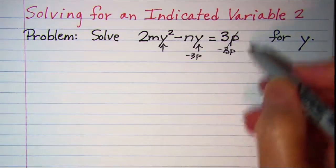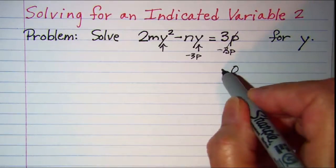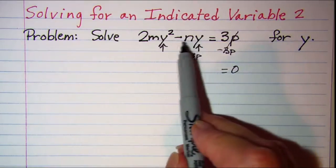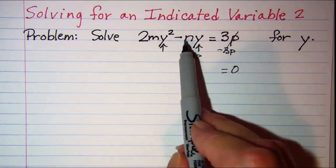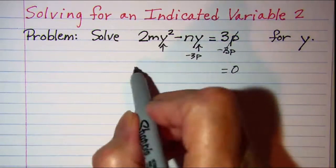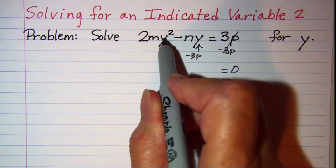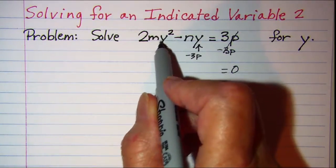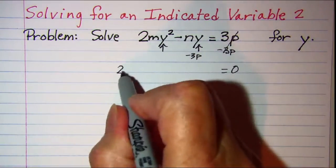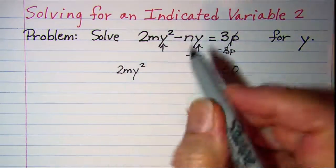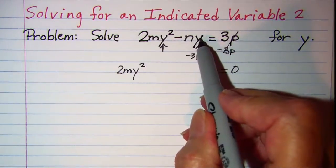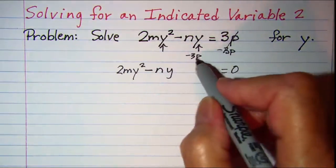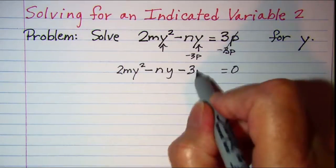So on the right side I have a zero. On the left side the negative 3p term will not combine with any of these terms. So I'm going to write this in descending order of the powers of y. My second degree y term I'll write first: 2my squared, and then the first degree which is this one I'll write next: minus ny, and then minus 3p on the end of that.